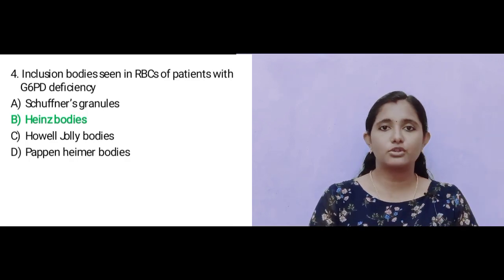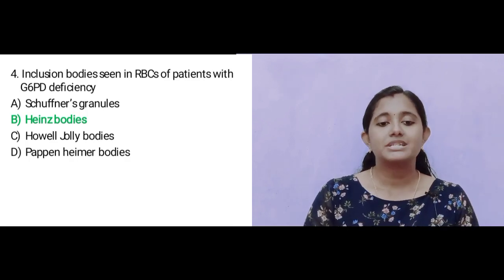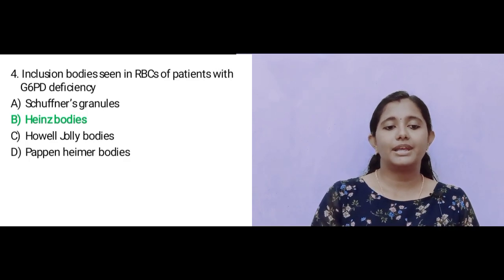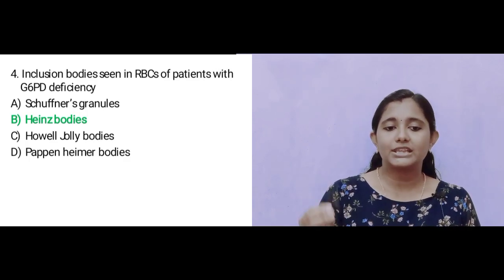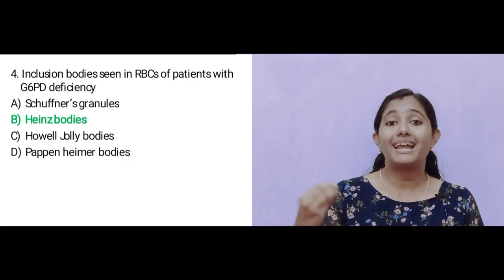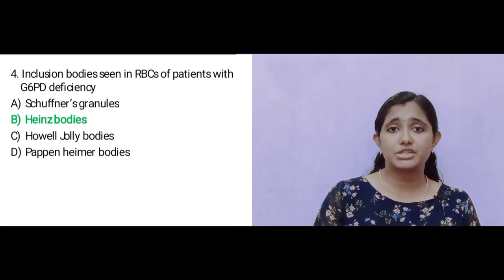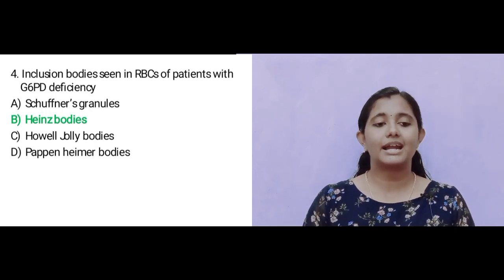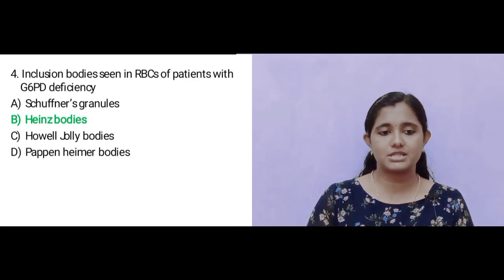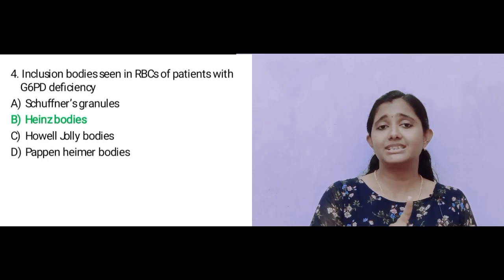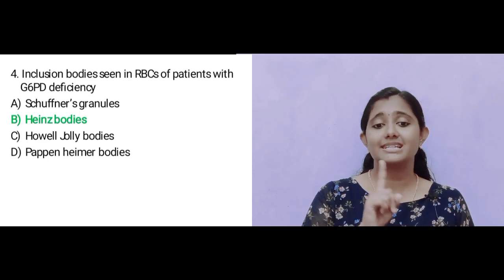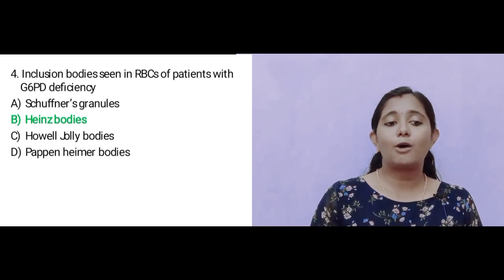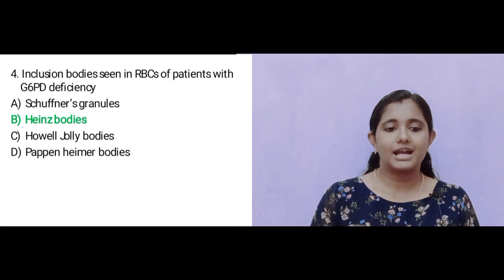Schüffner's granules are seen in erythrocytes infected with malarial parasites. Howell-Jolly bodies are single peripheral bodies in red cells — they represent DNA material remnants, seen in post-splenectomy, megaloblastic anemia, severe hemolysis, and myelopathic disease.